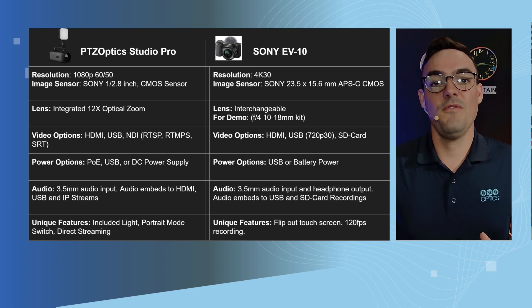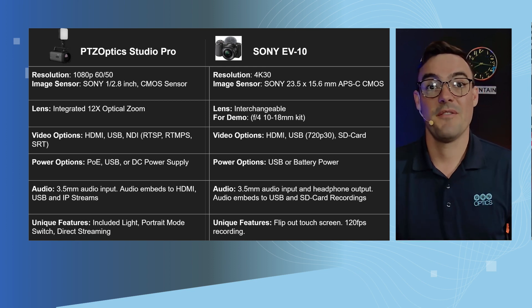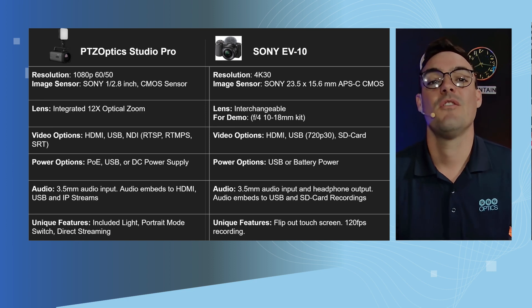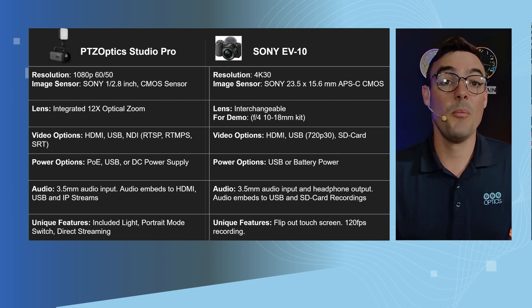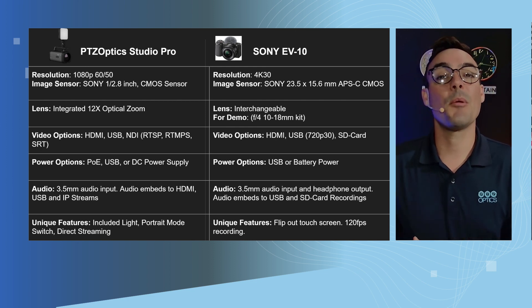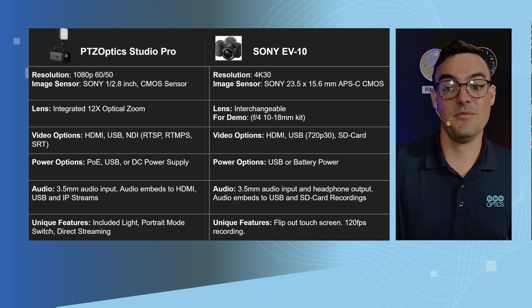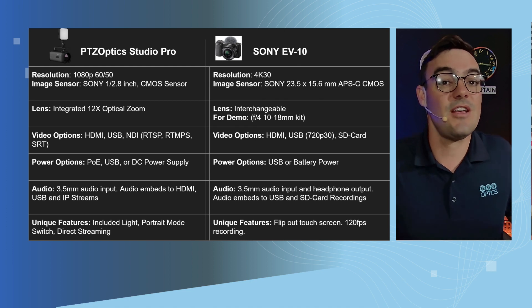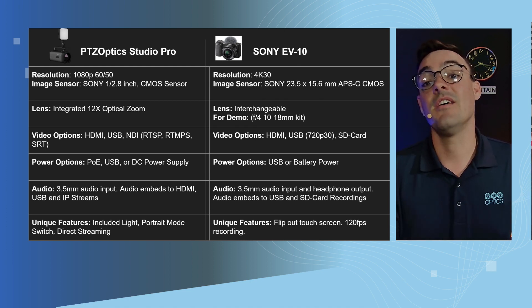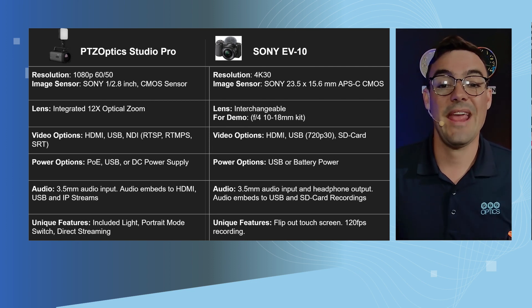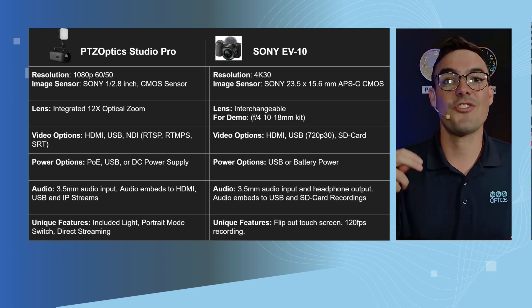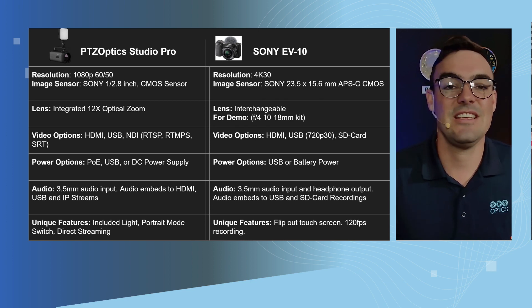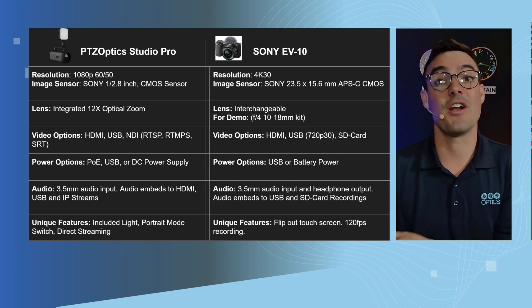Now, these are two very different cameras, but they are often used for live streaming, and that's what we're going to focus on here. The PTZOptics Studio Pro is a 1080p camera that can go up to 60 frames a second — or 50 frames a second for friends in Europe. The Sony camera can go up to 4K at 30 frames a second, so it is a 4K camera — a big difference. Both of these cameras actually have a Sony image sensor, which is why when you look at the test footage, they look quite similar. The PTZOptics Studio Pro has a 1/2.8-inch CMOS sensor, while the Sony sensor is a 23.5 by 15.6 millimeter APS-C CMOS sensor — a bigger sensor that will perform better in low light.